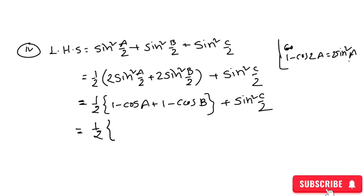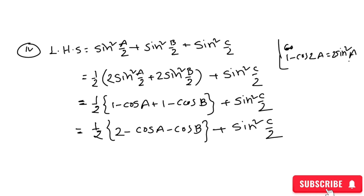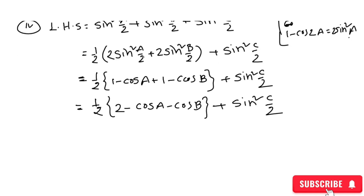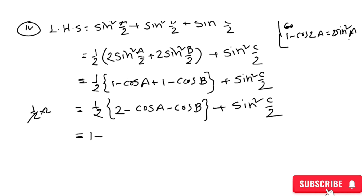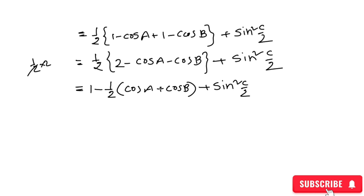Taking one-half common: one-half into (1 minus cos A) plus (1 minus cos B) plus (1 minus cos C). That gives us one-half times (3 minus cos A minus cos B minus cos C). We then take the common factor and apply the sum-to-product formulas for cos A plus cos B, using the identity for cos C.